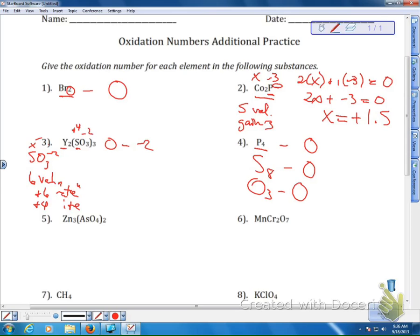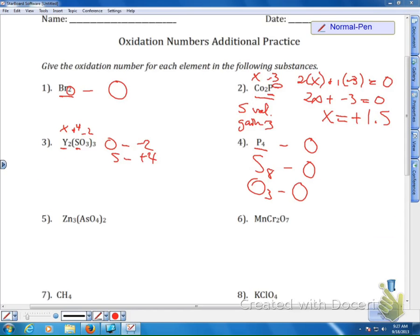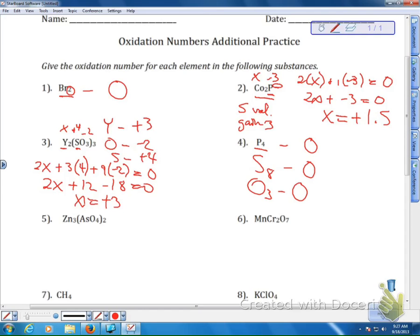Again, if you don't remember that, then just do it this way. And we'll solve for X. So we have 2X plus three times four for sulfur plus nine times negative two, and they all add up equals zero. So that is 2X plus twelve minus eighteen equals zero. Do all the algebra, we come out, and we find a plus three, which is perfectly reasonable for a transition metal.